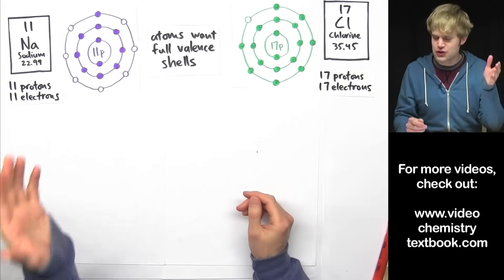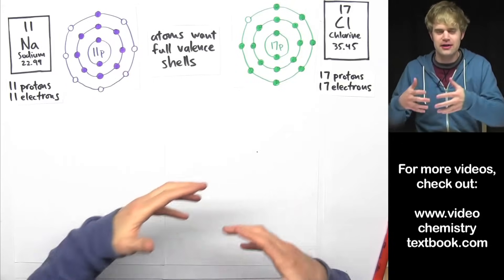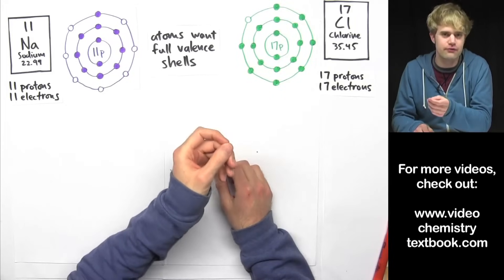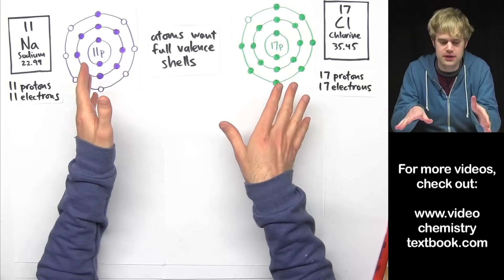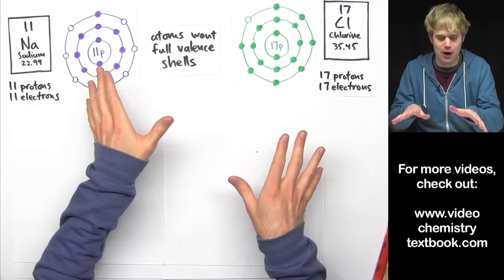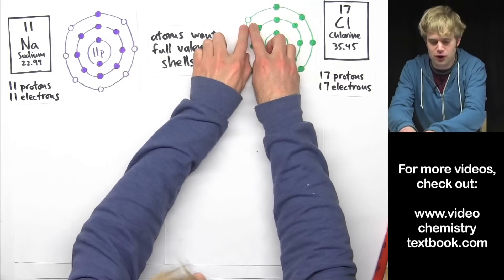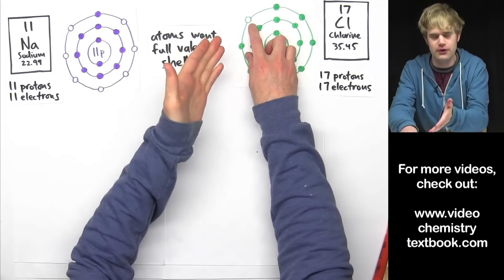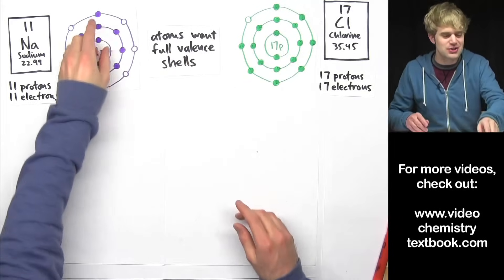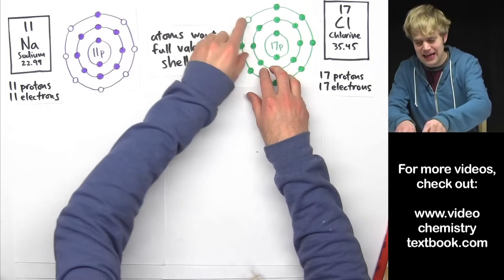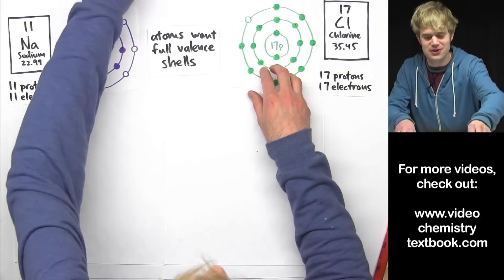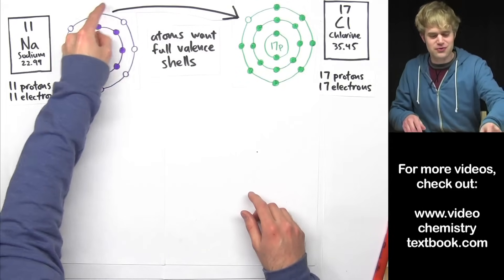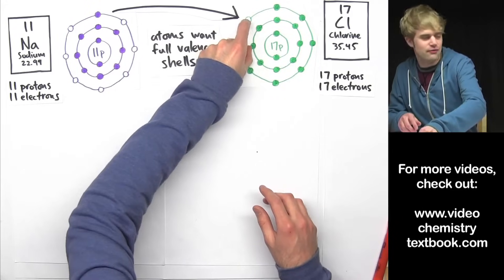So how are sodium and chlorine going to get happier? How are they going to fix their situation and try to fill their valence shells? Well, they can help each other out. Chlorine has one spot left before it's able to fill its valence shell, and so what happens is sodium can give chlorine one of its electrons. So this electron moves from sodium to chlorine to fill this spot.